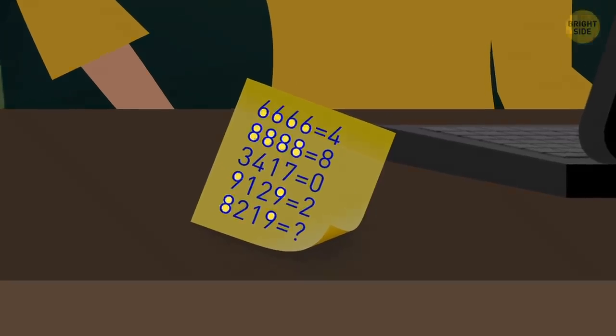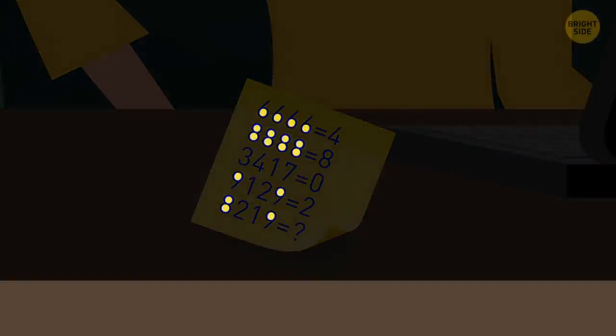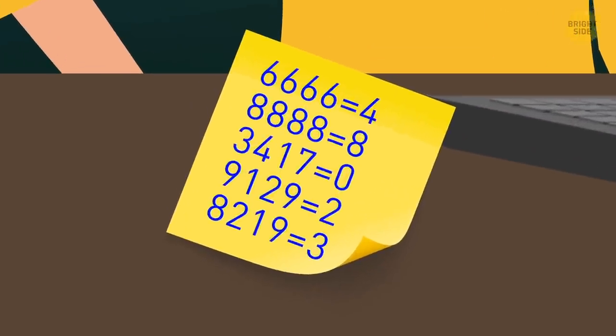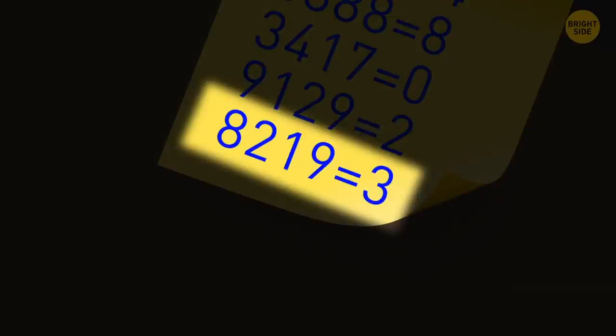Every number equals the number of circles in it, so the last number is equal to three. It's a five-digit number, so try 82193.